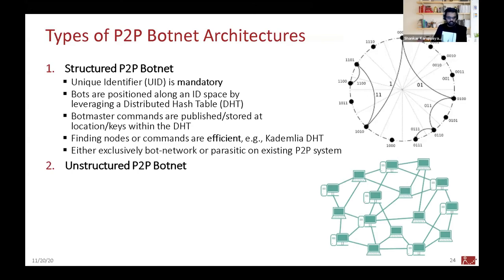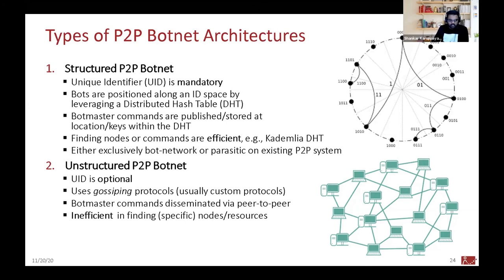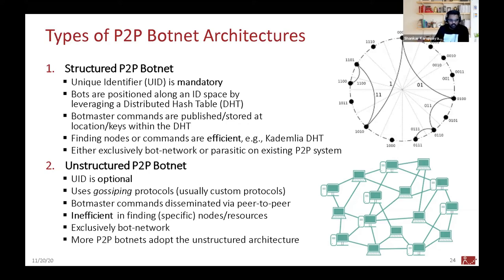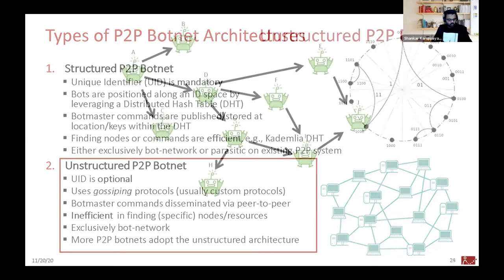The more common type nowadays is the unstructured P2P botnet, where there are no mandatory unique IDs. It uses a gossiping or multicast protocol, and bot masters issue commands via peer-to-peer method. It is inefficient to find specific resources because you must use gossiping or flooding to reach all nodes. In most cases, it is exclusively its own bot network. Most P2P botnets today adopt the unstructured architecture.